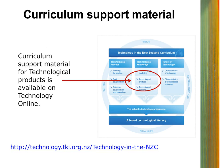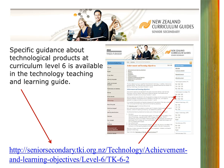We suggest that you go to the Technology in the NZC tab on Technology Online. Click on the technological products section of the diagram which you will see on the web page. You can find a summary of the key ideas about technological products, the indicators of progression, examples and the related resources on this page. More specific information about technological products at Curriculum Level 6.